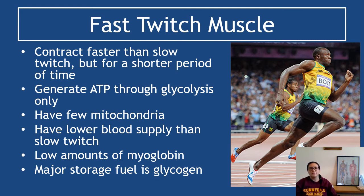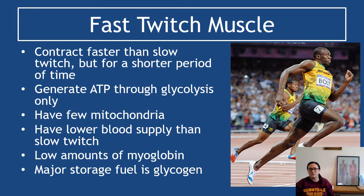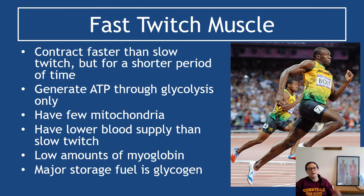Fast twitch muscle fiber contracts faster than slow twitch but for a shorter period of time. They burn through available energy much quicker and fatigue faster. They generate ATP only through glycolysis — a key fact to know. As a result of not doing aerobic respiration, they have very few mitochondria, a lower blood supply, and low amounts of myoglobin. Their major storage fuel is glycogen.